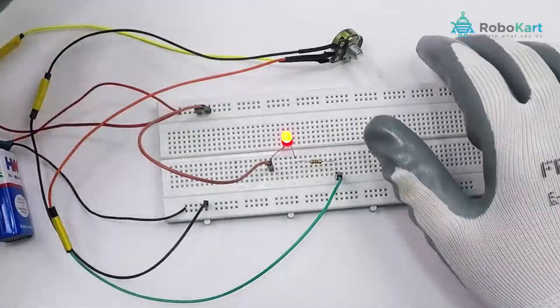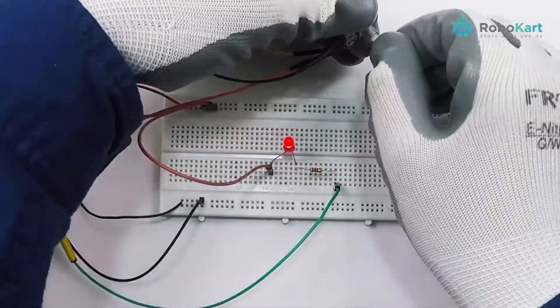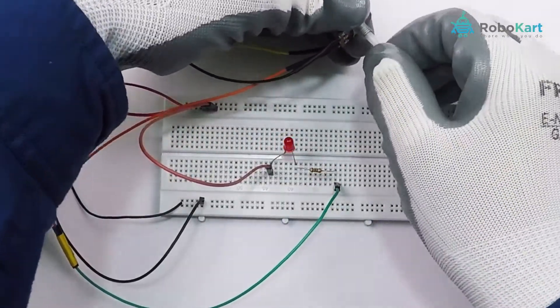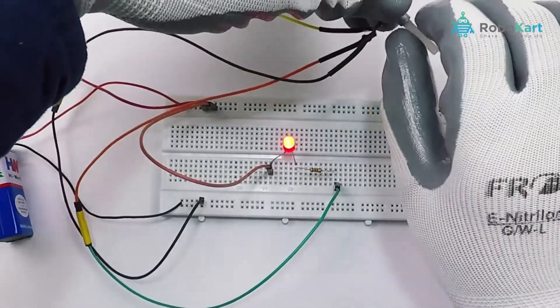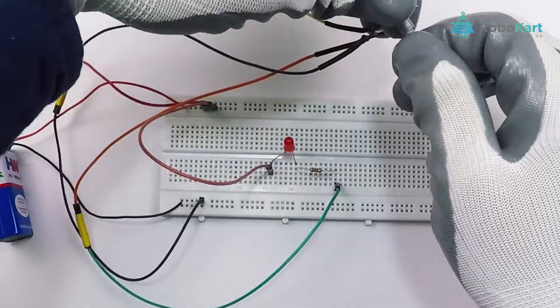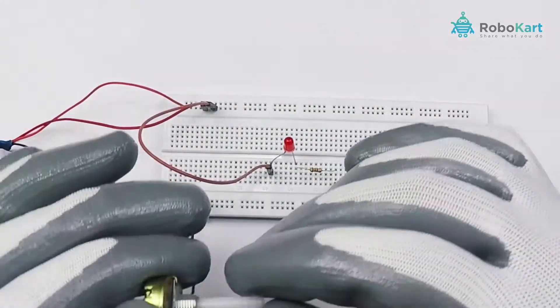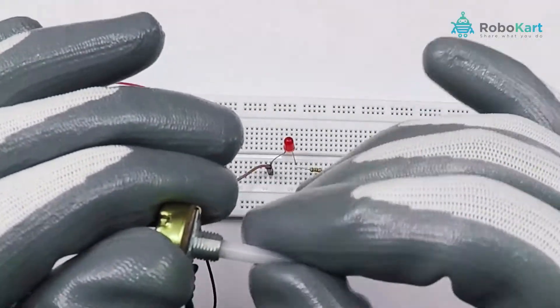As you move the knob of the potentiometer from right to left, the intensity of the LED increases. When it is at the rightmost position, the LED turns off.